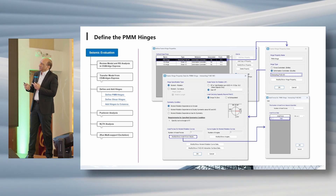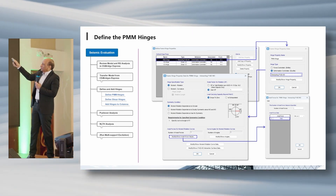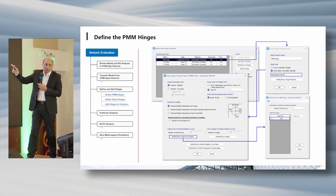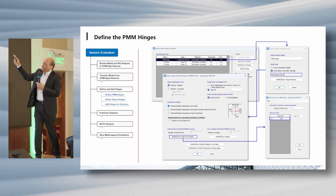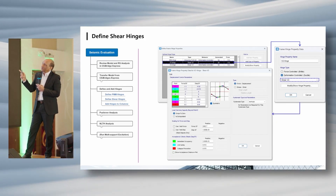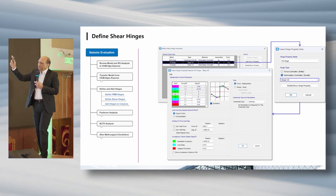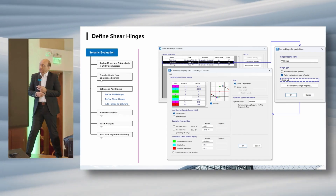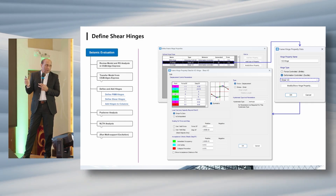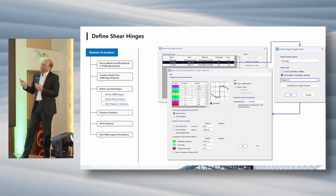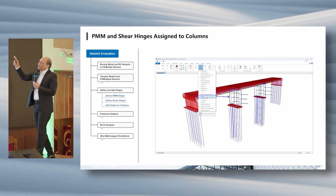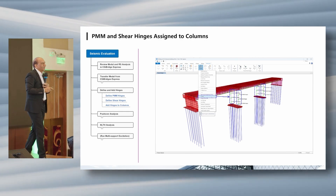You create the hinge properties and attach that data. You apply the axial force from the dead load because you need it for the moment-curvature curve. Then you complete the hinge definitions, provide the performance evaluation numbers, and define displacement control. There is a lot of data and work to be done defining this information. Finally, you assign those hinges — both PM hinges and shear hinges — to the columns, and the model is ready to run.